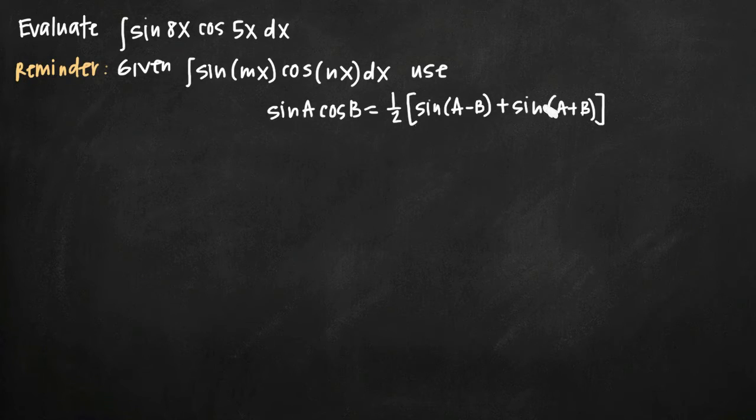So what the identity says is that when you have sine of a times cosine of b, regardless of the values of a and b, that's equal to 1 half times sine of a minus b plus sine of a plus b.